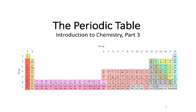Hi folks, welcome to part three of our intro to chemistry. In this video we're going to work on understanding how the periodic table is organized and also how to use the information present in the cells of the periodic table to figure out the number of subatomic particles in an atom of that element, and then that will allow us to draw a Bohr model.